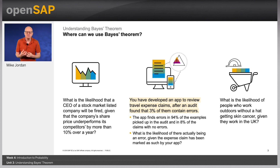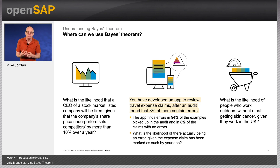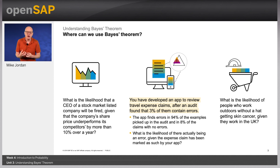Bayes' Theorem has many, many applications. For example: what is the likelihood that a CEO of a stock market listed company gets fired given that their company's share price underperforms their competitors by more than 10% over a year? Or, you have developed an app to review travel expense claims, after an audit found that 3% of them contain errors, and it finds errors in 94% of those picked up in the audit and 8% of those with no errors.